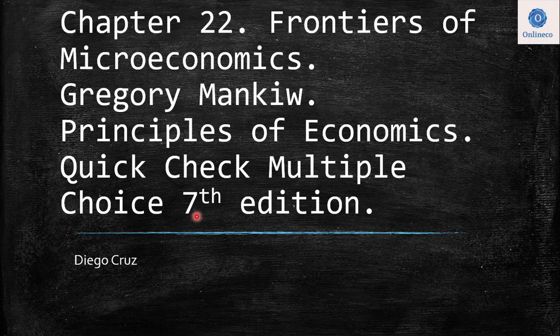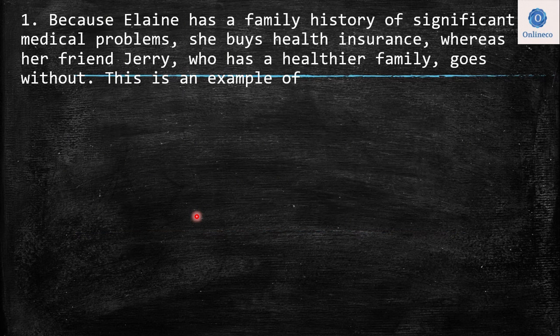Hi everyone, welcome to this new video. We're going to work today through all the quick check multiple questions of chapter 22. The chapter is Frontiers of Microeconomics. This is a book of Gregory Mankiw, Principles of Economics. So the first question says: